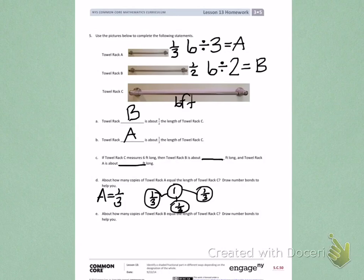Letter E. How many copies of towel rack B equal the length of towel rack C? Draw a number bond to help you. You need to look back at how we solve letter D, knowing that letter B is one half of letter C. So letter D, it took three copies.